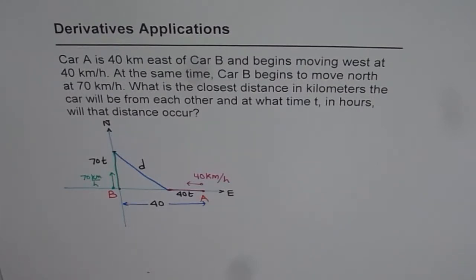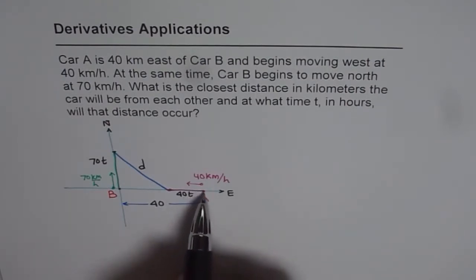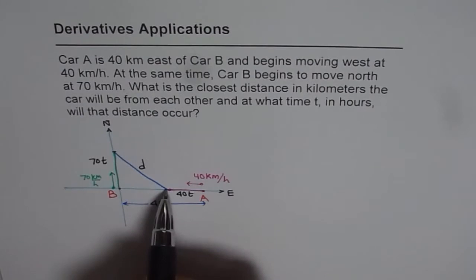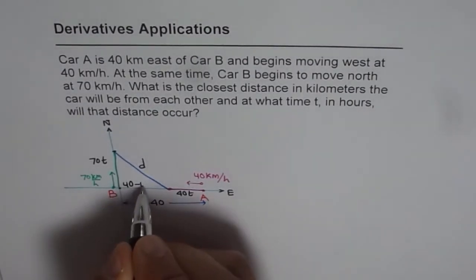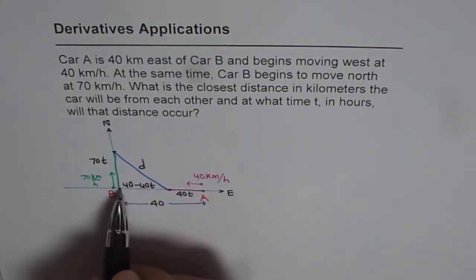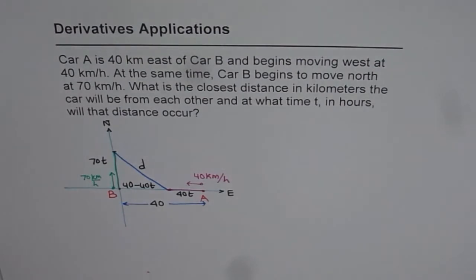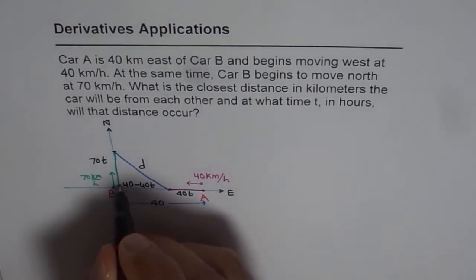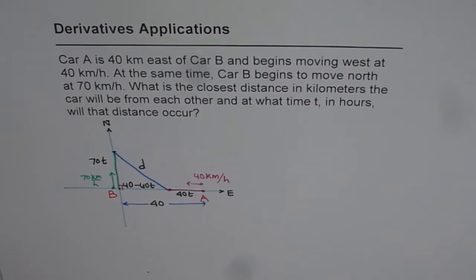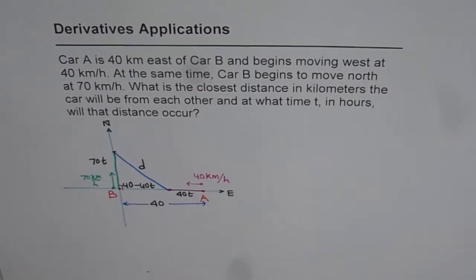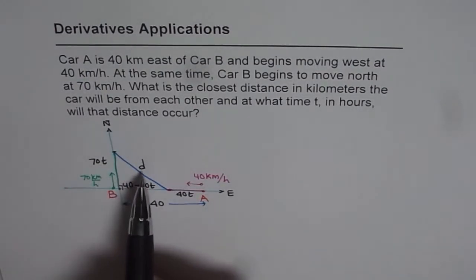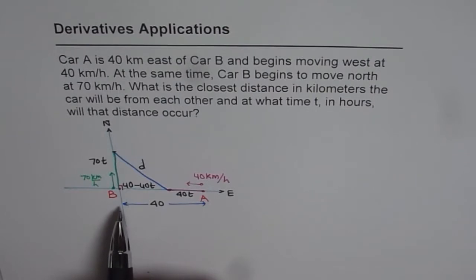So that is the question. Now, initially, A and B were 40 kilometers away. In time T, A traveled 40T distance. So how much is left? Left is 40 minus 40T. So that becomes kind of base of this right triangle. We do have a right triangle here since directions are east and north. The other car which moves north has traveled 70T. Now from here, how is D related? That is what we need.